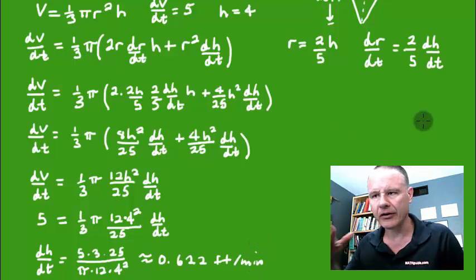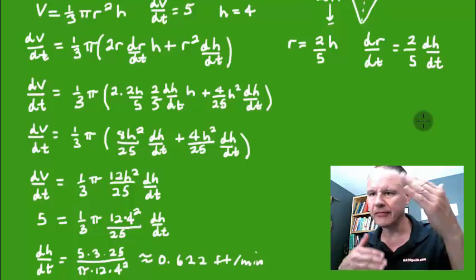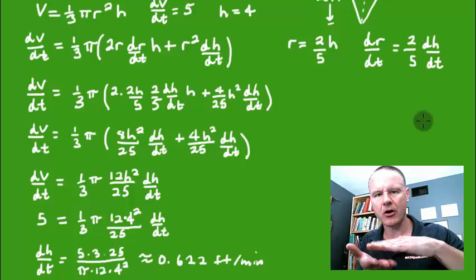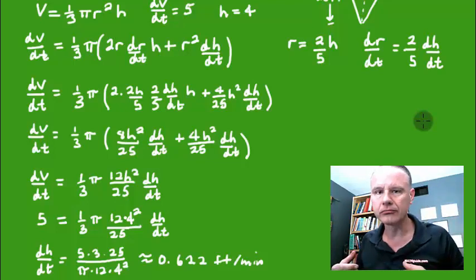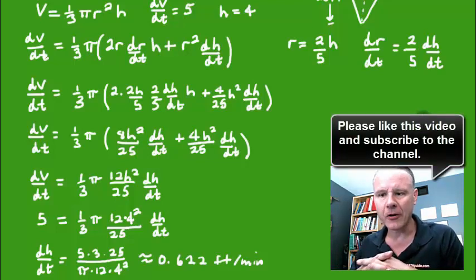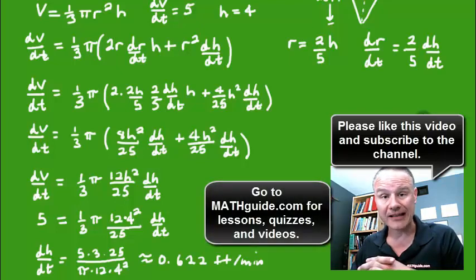What you could do is calculate this for different heights - we did this for a height of 4, you could calculate this for a height of 8, 10, 18 and so on, and you could try to determine at what points along the way is the height of the water level changing fastest. Does it change fastest towards the bottom of the cone or as you go up towards the top? So I'll let you experiment with that, but please like this video, please subscribe to the channel, go back to mathguide.com, check out our lessons, check out our interactive quizzes, and of course our instructional videos. Take care.